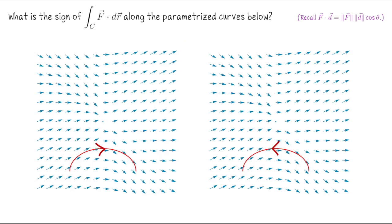Let's talk about what we expect from this work computation. If the force and the displacement are mostly pointing in the same direction — the angle between them less than 90 degrees — then F dot d is positive because cosine of theta is positive, so we compute positive work. If the force mostly works against the path — the angle more than 90 degrees — then the cosine is negative and F dot d is negative. In summary: if the curve flows with the vector field, F dot d is positive; if it flows against the vector field, F dot d is negative.